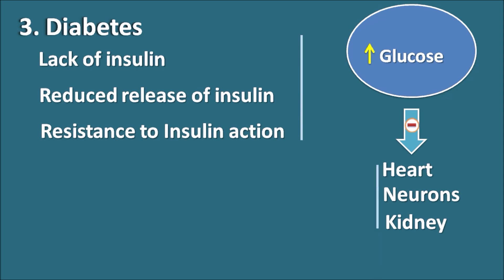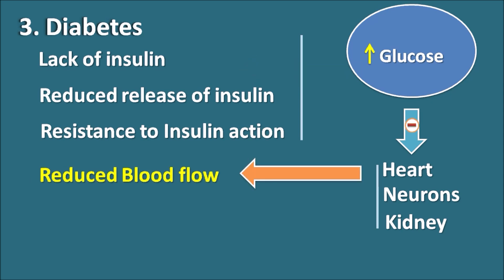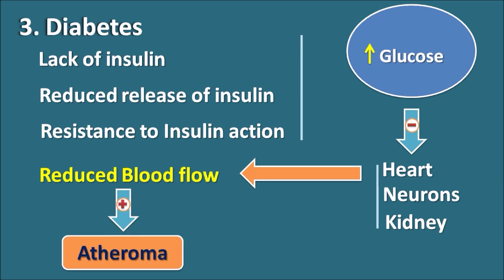When the heart is not working properly it may result in reduced blood flow to the systemic organs, and when there is reduced blood flow it may increase the formation of atheroma. So in this way, diabetes can increase glucose levels which can induce atherosclerosis. It is better to control diabetes so that glucose levels are within normal limits, thereby preventing atherosclerosis.